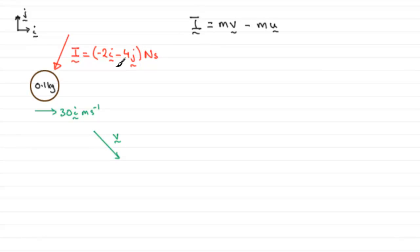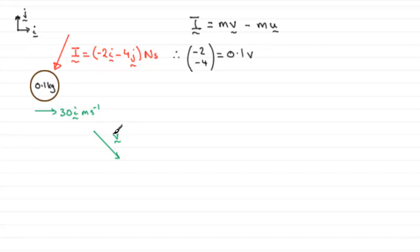We know what I is, and we can write this in either the unit vector format or as a column vector — it's totally up to you. As a column vector, we've got minus 2, minus 4. And we've got mass equal to 0.1, multiplied by the final velocity v, minus mu — mass again 0.1 — times the initial velocity, which was 30i, or as a column vector, 30, 0.